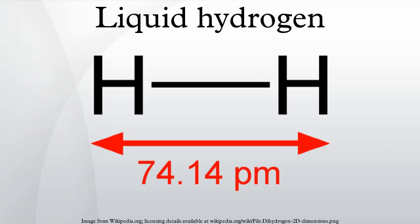In 1885, Zygmunt Florenty Wróblewski published hydrogen's critical temperature as 33 Kelvins, critical pressure as 13.3 atmospheres, and boiling point as 23 K. Hydrogen was liquefied by James Dewar in 1898 by using regenerative cooling and his invention, the vacuum flask. The first synthesis of the stable isomer form of liquid hydrogen, parahydrogen, was achieved by Paul Harteck and Karl Friedrich Bonhoeffer in 1929.